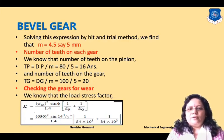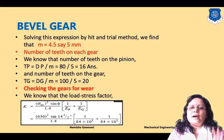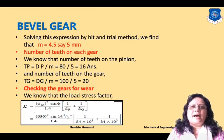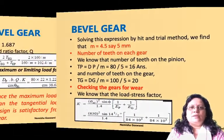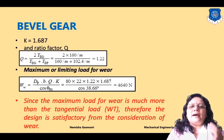Now we check the design for wear. First, we find the load stress factor K using: K = (σes² × sin φ) / 1.4 × (1/Ep + 1/Eg). Substituting σes = 630 MPa, φ = 14.5°, Ep = Eg = 84 kN/mm², we calculate K.